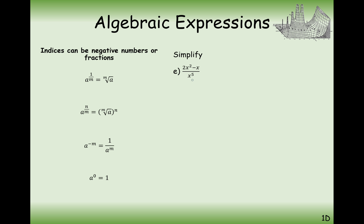When simplifying algebraic fractions, separate them into two fractions with the same denominator and split up the numerator, then subtract the indices. So for this expression we get 2 over x cubed minus 1 over x to the 4, because 2 minus 5 is minus 3 and 1 minus 5 is minus 4. We can rewrite this as 2x to the power of minus 3, minus x to the power of minus 4.